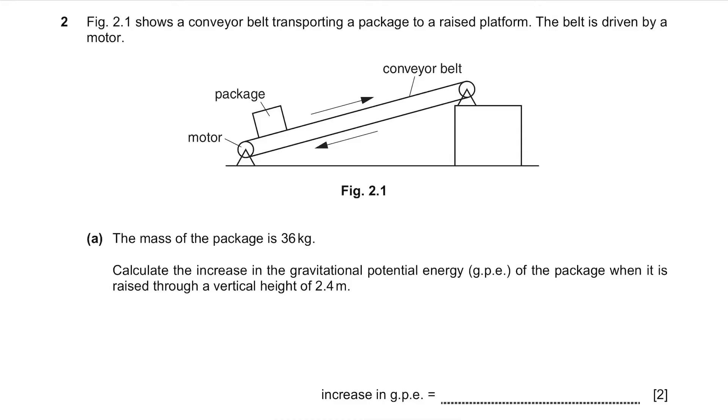We need to find the GPE, so let's use the formula. GPE equals to MGH. The mass is given here, 36kg. G is the acceleration of freefall, 10m per second squared. And H the height is 2.4m. So it's 36 times 10 times 2.4 giving 864J as the answer.